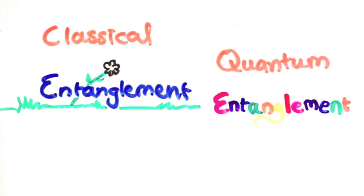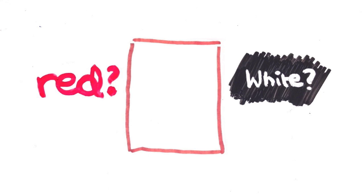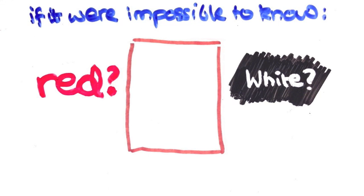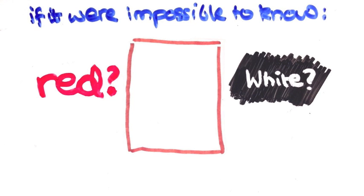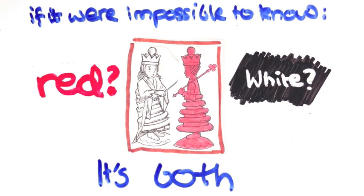Let's go back to our example. While the boxes are closed, we don't know which state the object in each box is in, red or white. If it were truly impossible to know, which isn't actually the case in everyday life, but let's say it is this time, then quantum mechanics tells us that each object must be both red and white at the same time.